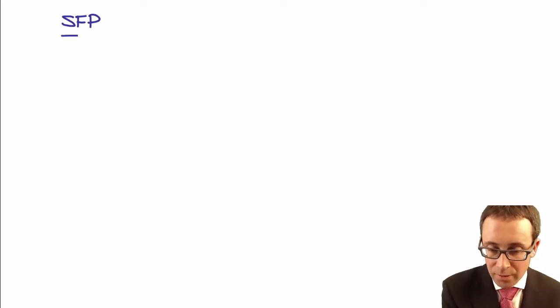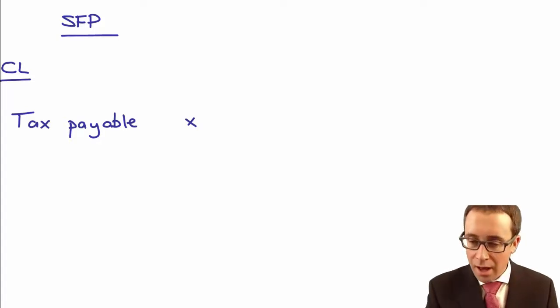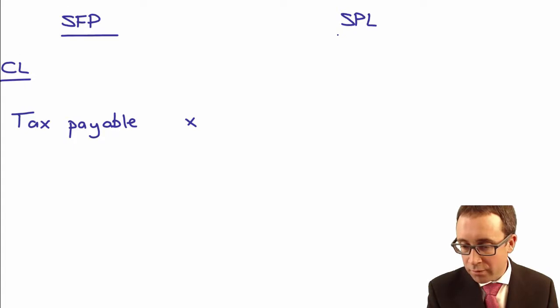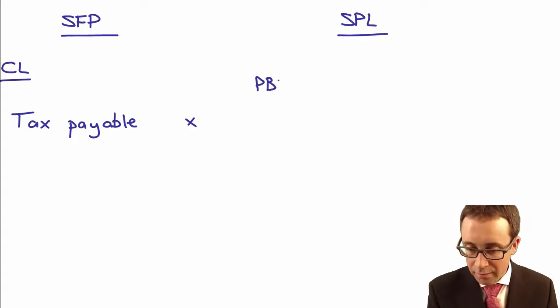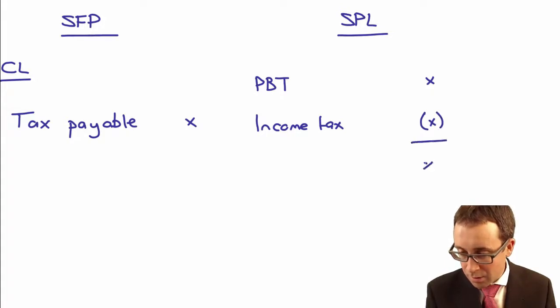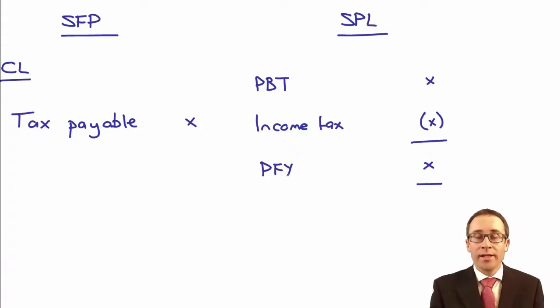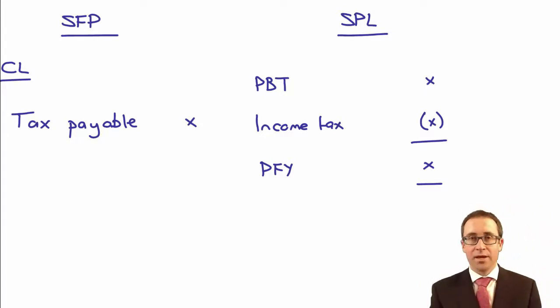When looking at how things appear in the financial statements, in the statement of financial position you will have, within your current liabilities, your tax payable balance. And then in the statement of profit or loss, you have PBT, then your income tax expense, which gives you your profit for the year. What we need to be able to do is calculate all of those tax figures — the tax payable and the income tax expense.